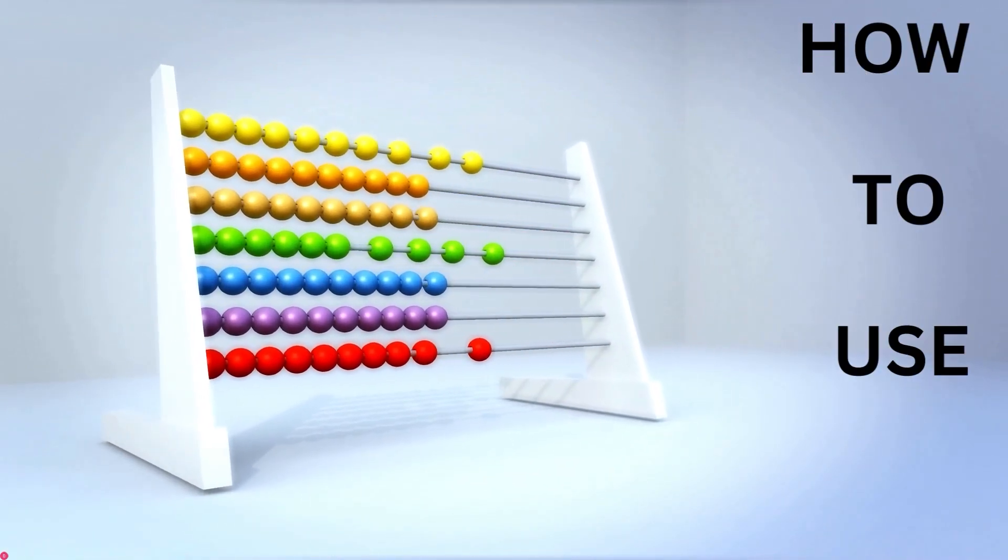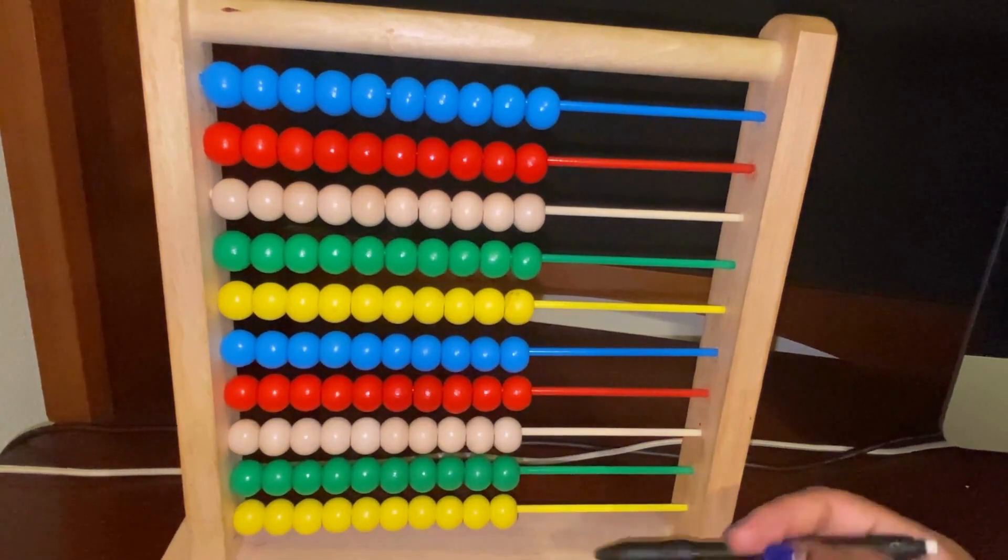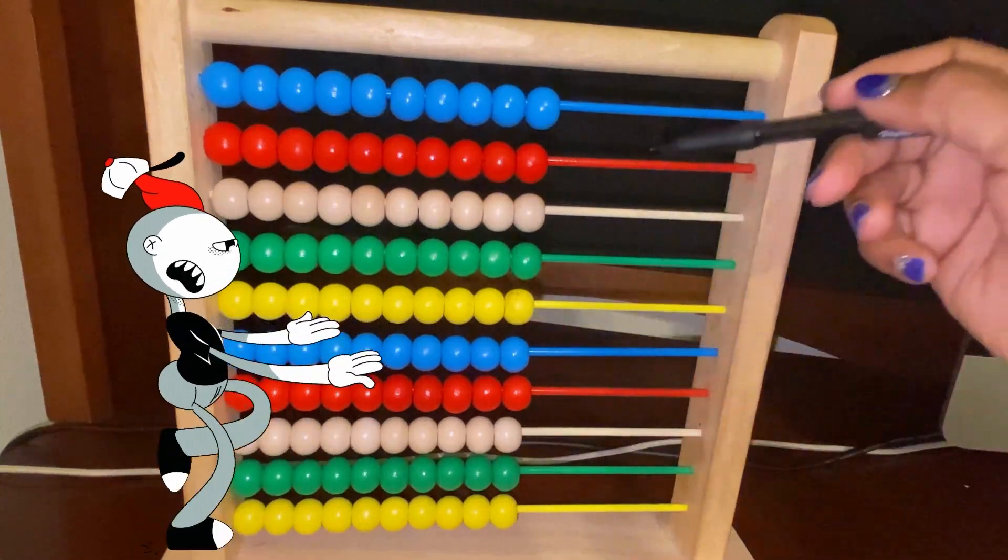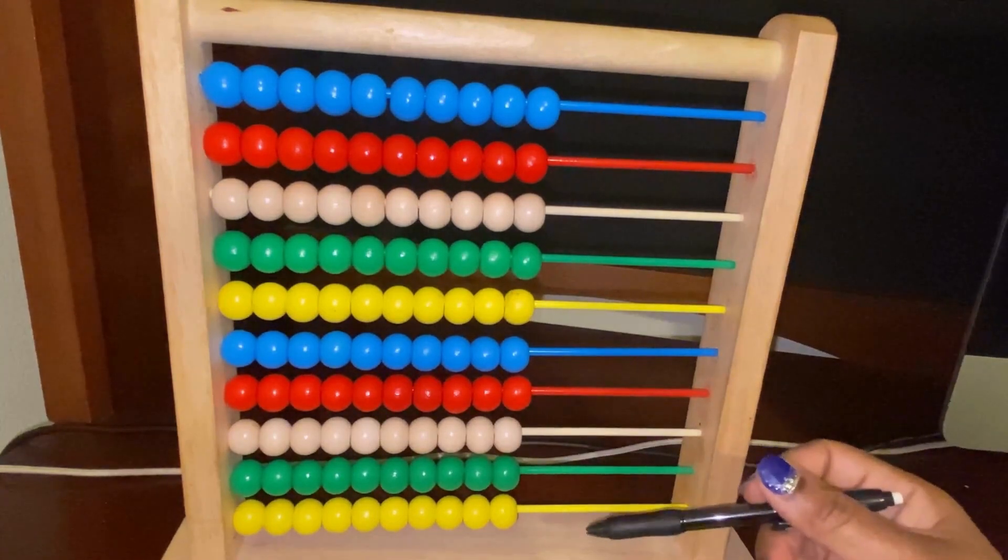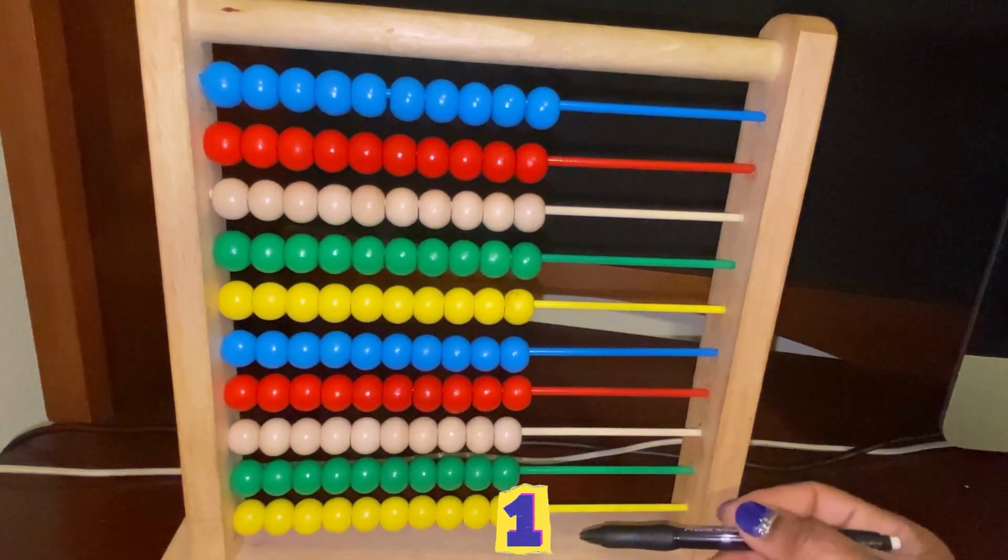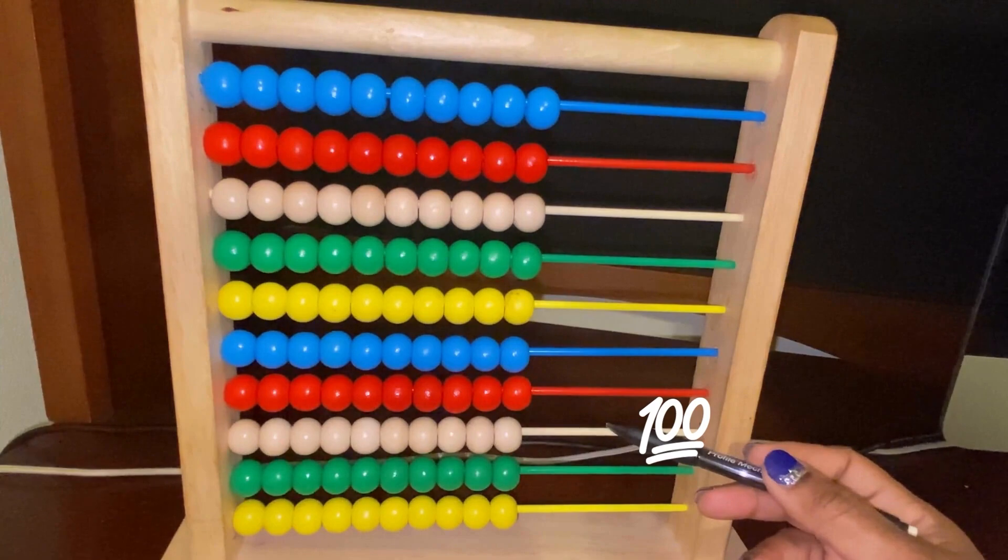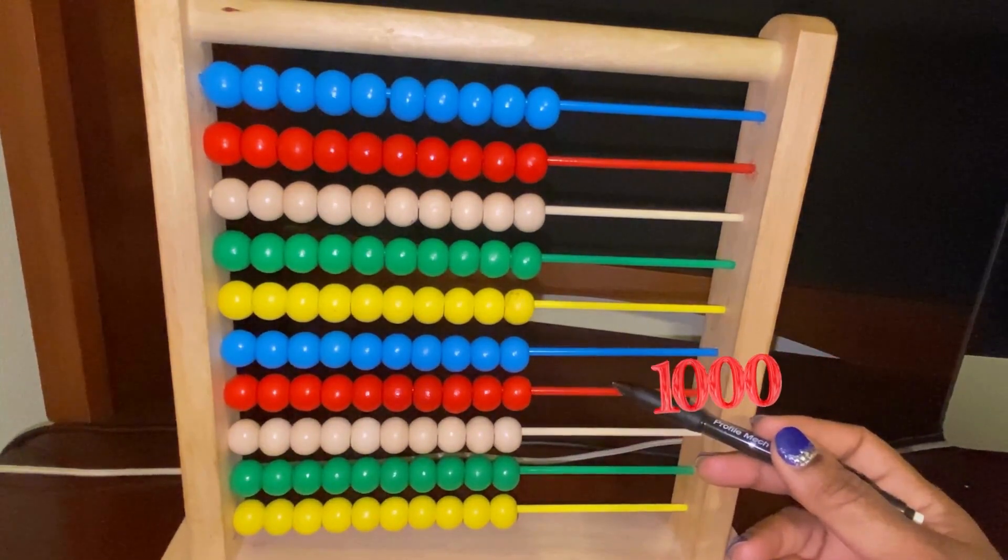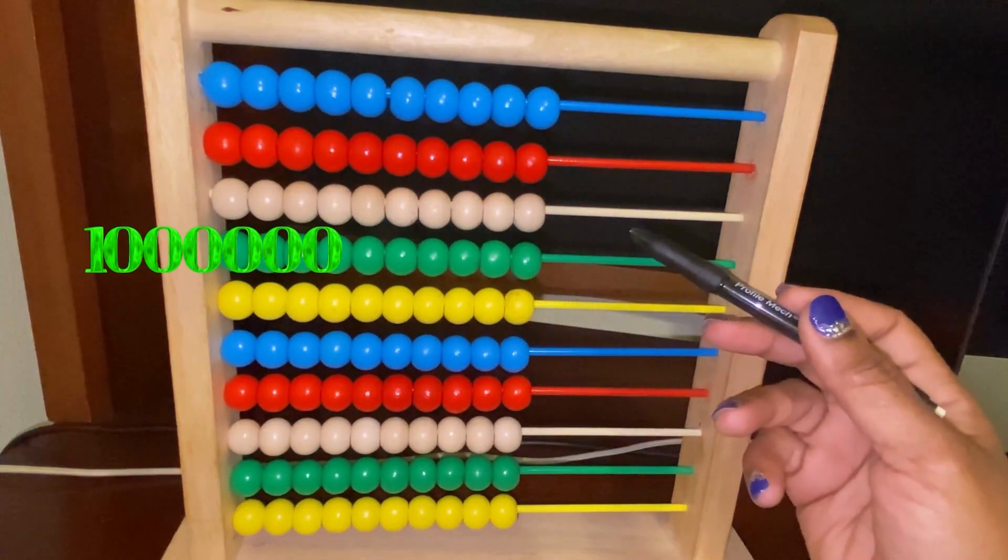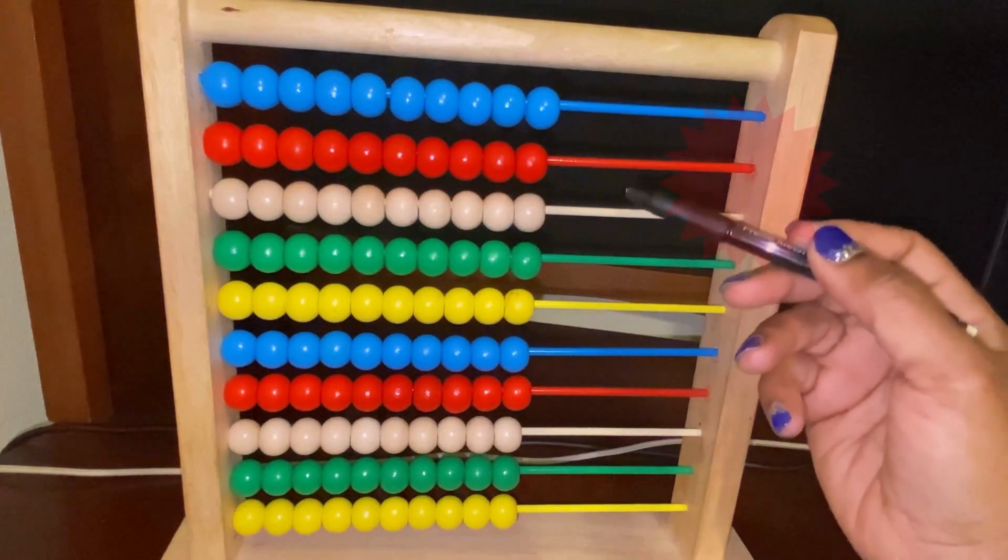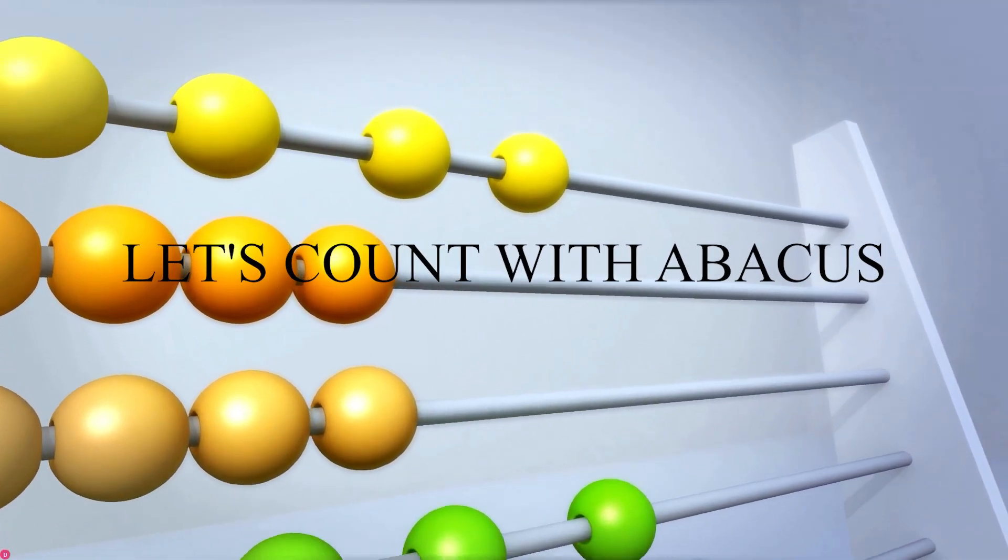How do we use an abacus for addition? There are different rows. Each color is a row and each row is a different placeholder. So we have the ones indicated by the yellow, the tens indicated by the green, hundreds by the white, the thousands, ten thousands, hundred thousand, one million, ten million, hundred million, and one billion.